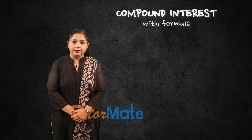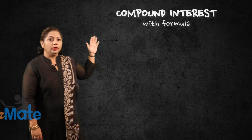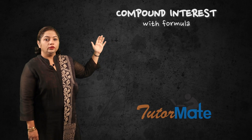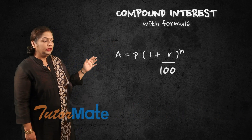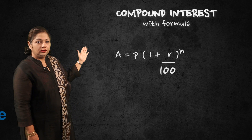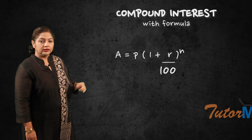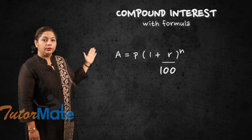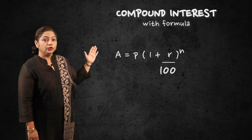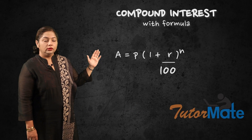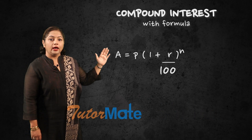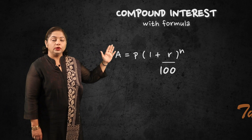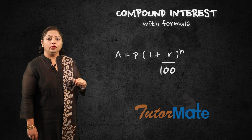Now let us understand the lesson of compound interest with formula. The formula we are going to use says: Amount A is equal to principal P into bracket 1 plus rate R upon 100, bracket complete, raised to N, where N is number of years.